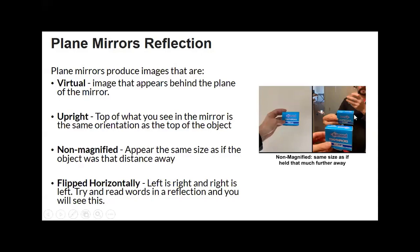It's upright because I'm standing up and there's an image of me when I look. You see my hand, which is the object, and you see the image of my hand in the reflection. I'm upright, and if you take a look, the image is upright because it's facing the same way. I'm holding my hand upright and you see my hand upright as well.